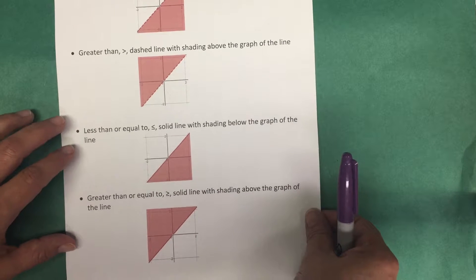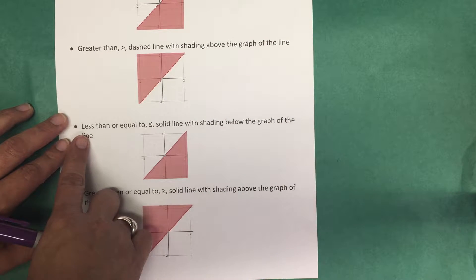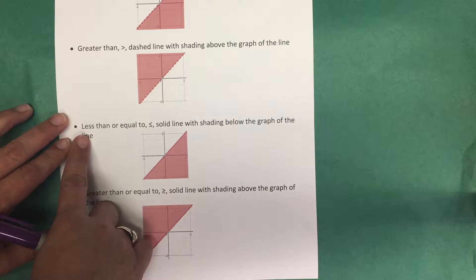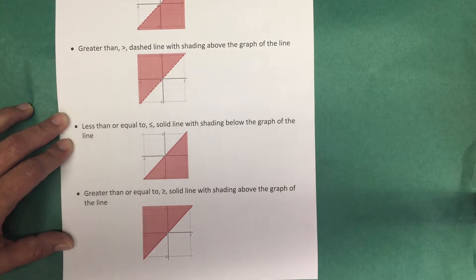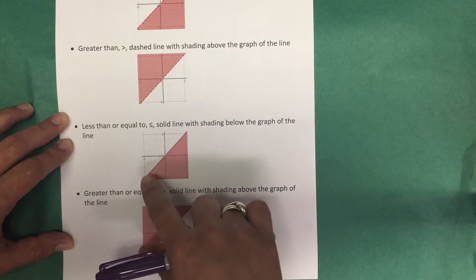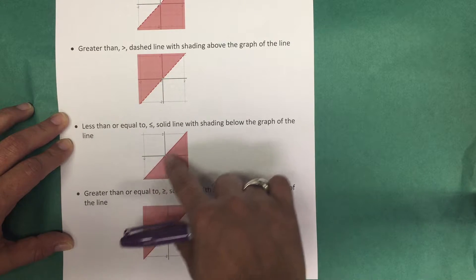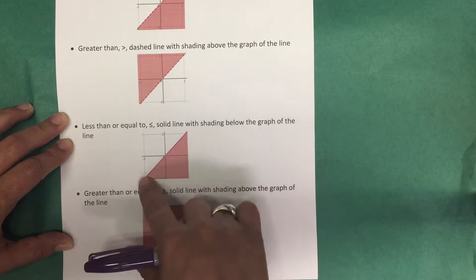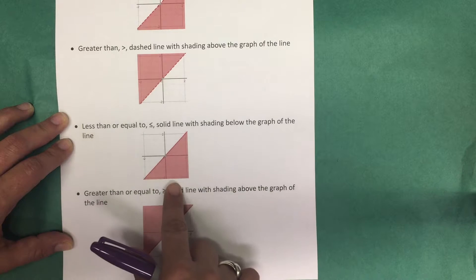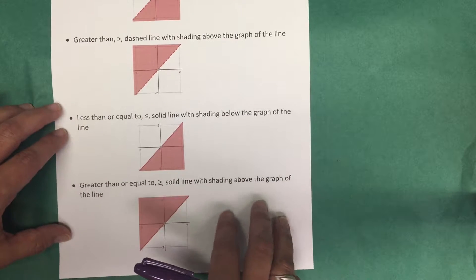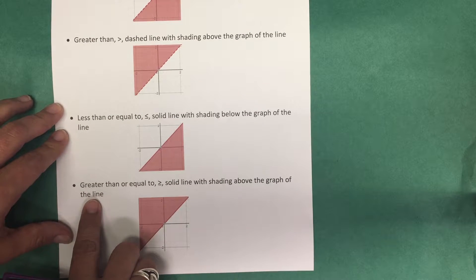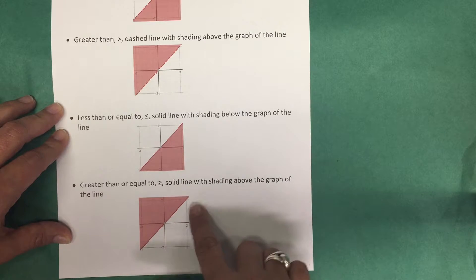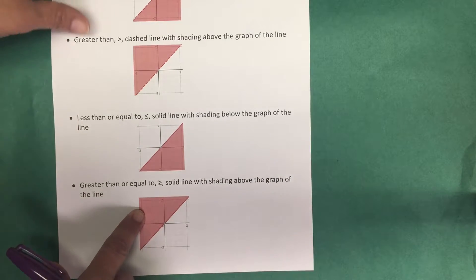When we are looking at less than or equal to, the graph of that inequality is going to be a solid line with shading below the line. For greater than or equal to, the graph of that inequality will be a solid line with shading above the line.